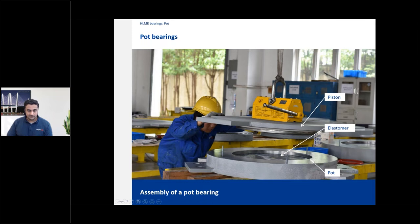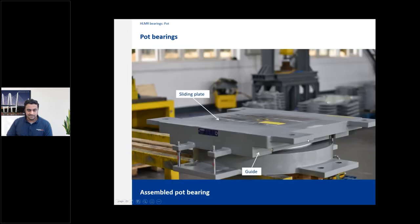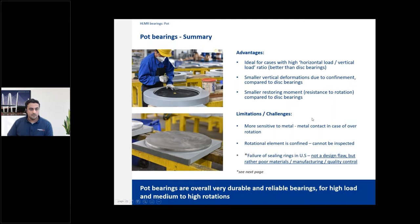Here you see assembly of the pot — the elastomer is placed first, then the piston on top. Once assembled with a sliding plate, you get the full assembly. In this example it's a guided pot bearing with two guide rails, allowing movement only in one direction. Pot bearings are ideal for high horizontal load applications because the large pot wall provides much greater surface area for resisting horizontal force compared to a disc bearing's central pin.